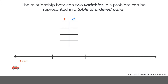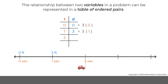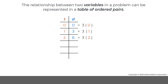The distance that the car travels in 0 seconds is 3 feet per second times 0 seconds, which equals a distance of 0 feet. The distance that the car travels in 1 second is 3 feet per second times 1 second, which equals a distance of 3 feet. The distance that the car travels in 2 seconds is 3 feet per second times 2 seconds, which equals a distance of 6 feet. This process can be repeated to extend this table of ordered pairs.